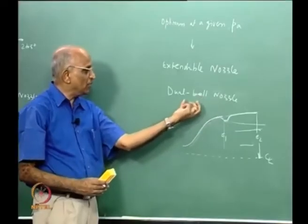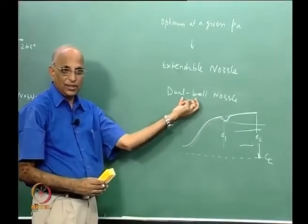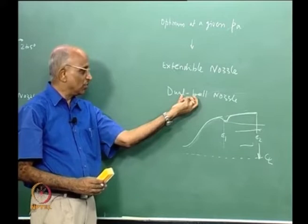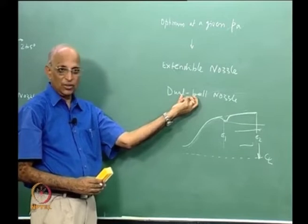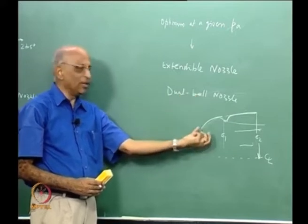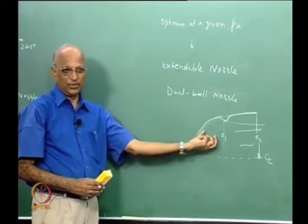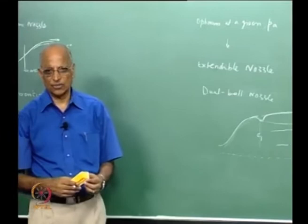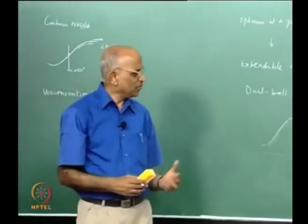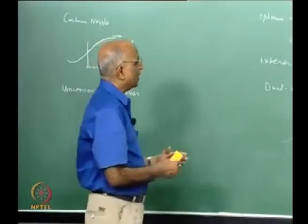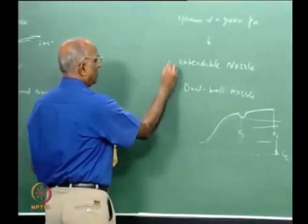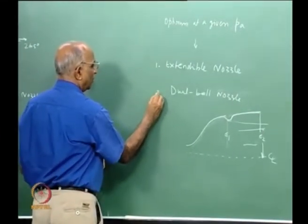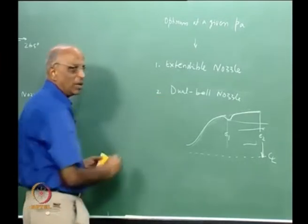This is known as a dual bell nozzle. In fact, this month's issue of the AIAA journal has a paper on the dual bell nozzle looking at the optimum conditions — there is still work going on in this area. So the second unconventional nozzle is the dual bell nozzle, after the first which was the extendable nozzle.